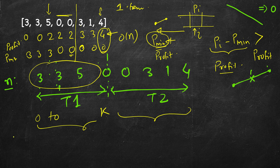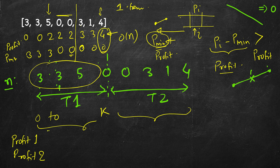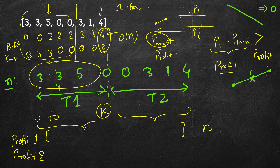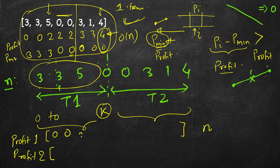We need to keep track of two arrays — profit1 and profit2. We fill them in a dynamic programming fashion. profit1[k] denotes the maximum profit in one transaction from index 0 to k. We already know how to solve the one-transaction case, so filling profit1 from left to right gives us: 0, 0, 2, 2, 2, 3, 3, 4.